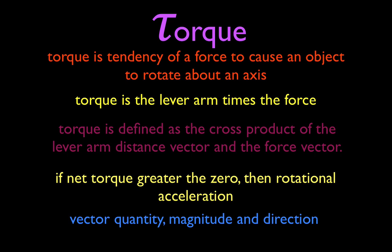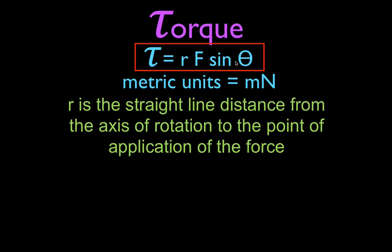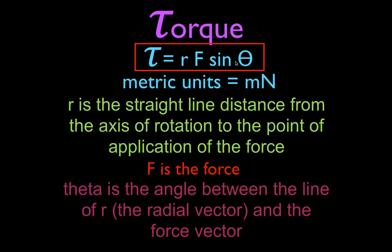Torque is a vector quantity, which means it must be described by its magnitude and direction. This is the equation we use to calculate the magnitude of torque. This is the Greek letter tau — the symbol we use for torque — and torque equals R times F times the sine of theta. R is the straight-line distance from the axis of rotation to the point of application of the force. F is the force. Theta is the angle between R and the force vector.